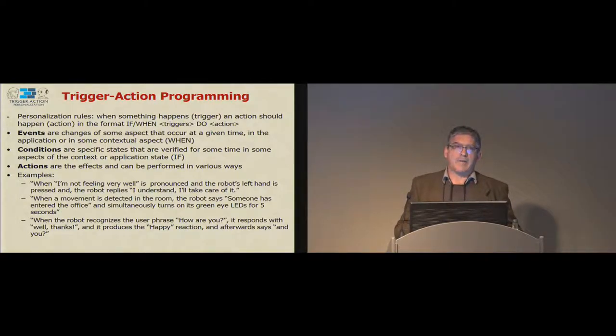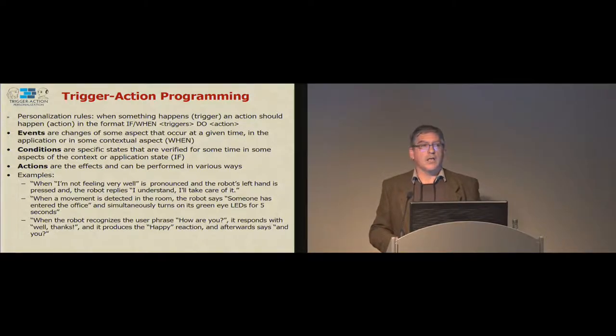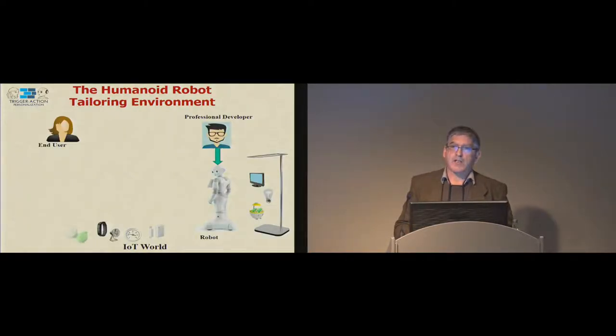In order to address such challenges, we have a language where we can distinguish between events and conditions. Because events, when something really changes and condition a specific state that can be true for some time. And then it's possible to define various types of actions. We can say, when I look like sad, then the robot should tell me some joke. Or when someone arrives at the door, the robot should go there and say, who are you? What do you want? Things like that. It's easy to specify.